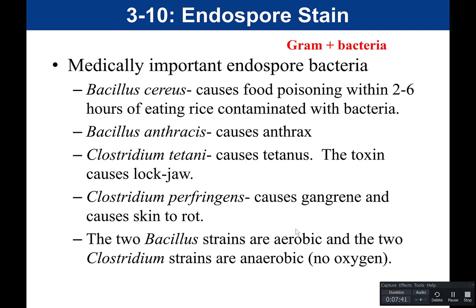Let's look at some medically important endospore-producing bacteria. The first is Bacillus cereus, which causes food poisoning within two to six hours of eating contaminated rice. Many bacteria within Bacillus and Clostridium are most commonly found in soil. In the case of B. cereus, if the bacteria is in soil and on the rice crop, when the rice is harvested, dried, and dehydrated, that bacteria undergoes sporulation and forms spores that remain on the rice.